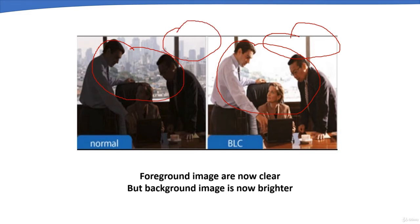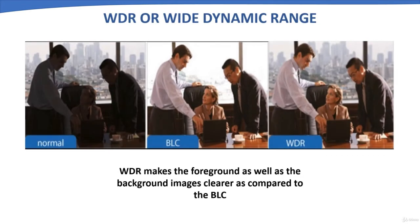That is where WDR or Wide Dynamic Range comes into play. WDR is a far more advanced version of BLC, but the intent is the same. With BLC, the objects and people are brought into focus so you can distinguish who they are, but the background is blurry. In the WDR image, both the foreground and the background are in focus.